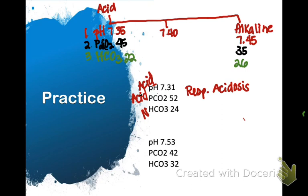Next example: pH is 7.53 — that's alkaline, greater than 7.45. pCO2 is normal, between 35 to 45. HCO3 is 32, which is greater than 26, so it's alkaline. We have a normal respiratory component but an off bicarb, so we know it's alkalosis. Because the bicarb is off, we know it's metabolic alkalosis.